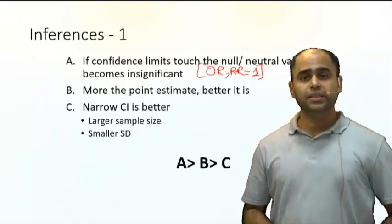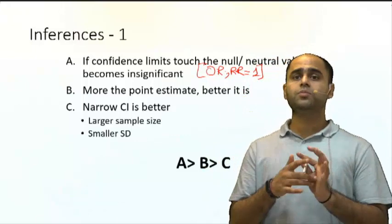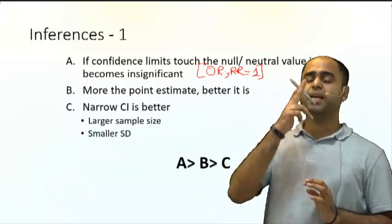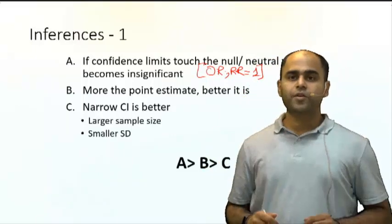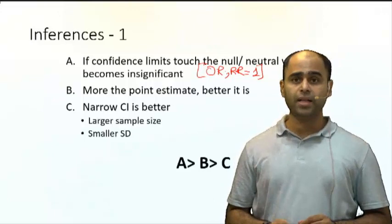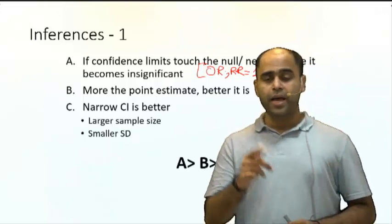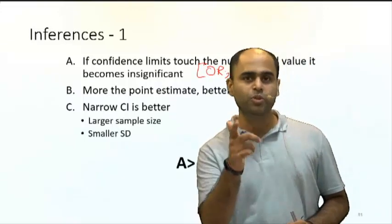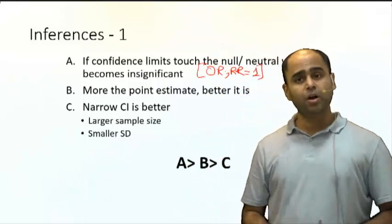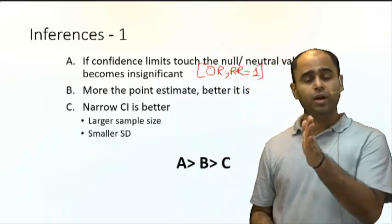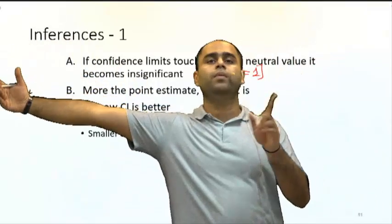For example, if the odds ratio of smoking e-cigarettes is 1.4, smoking normal cigarettes is 2.4, and smoking bidi is 3.4, which is most dangerous? The answer is bidi, because 3.4 is far away from 1. More the distance of the point estimate from 1, more the significance.